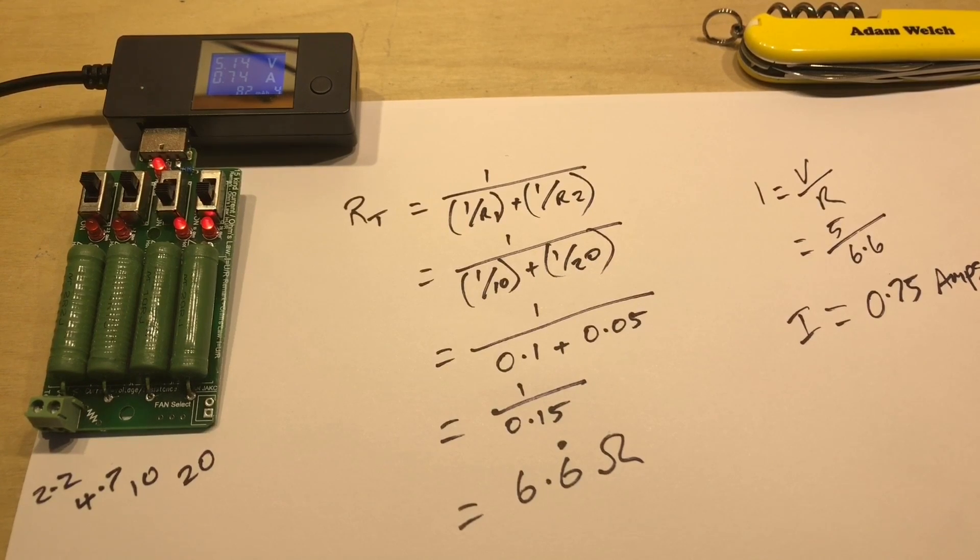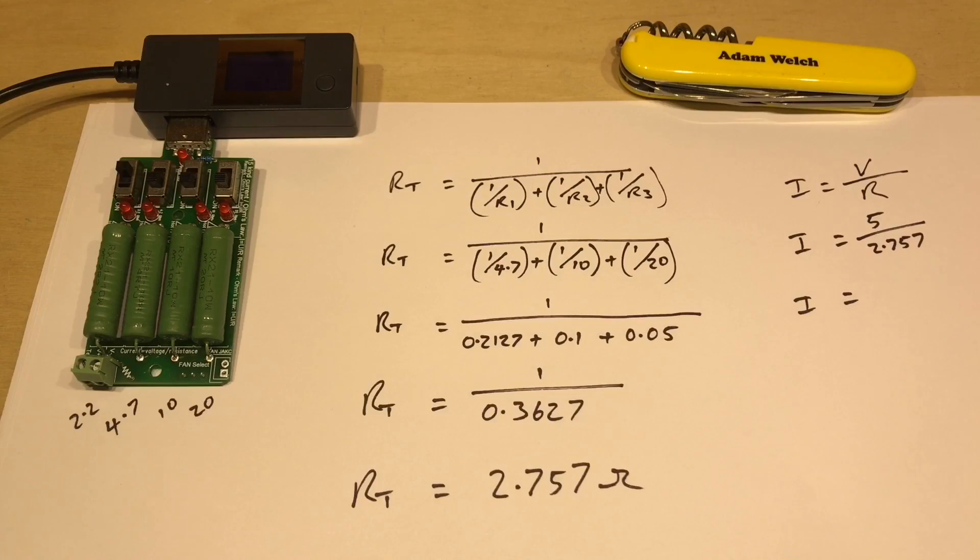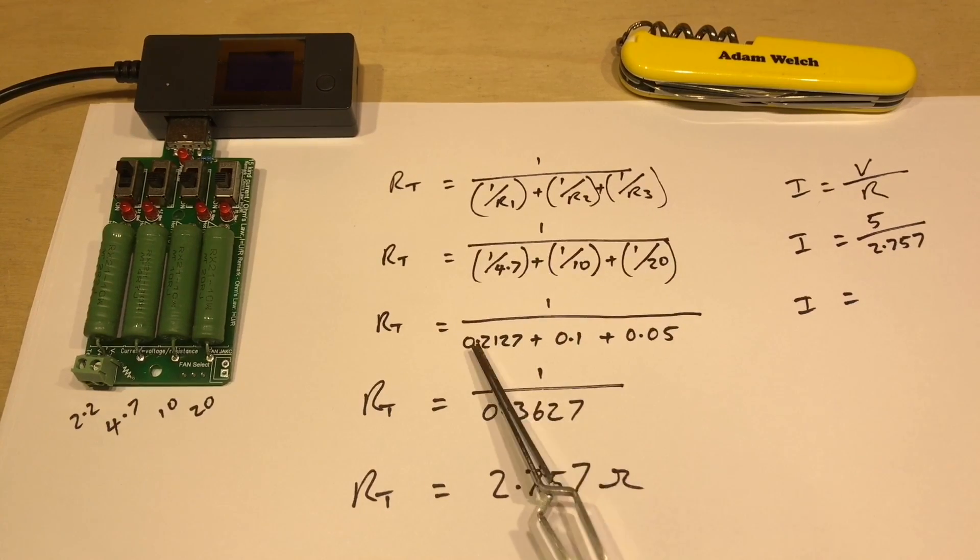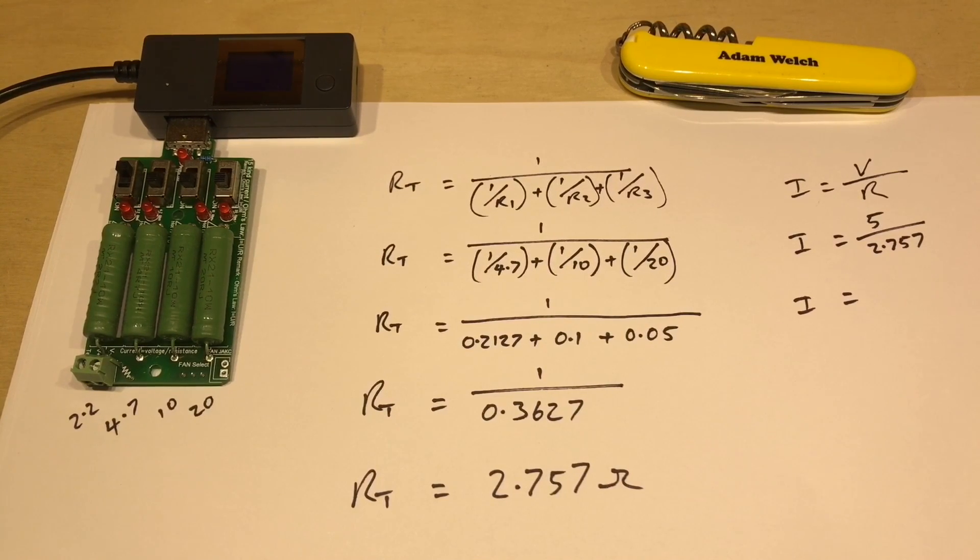Well I think it's worth doing a second example and in this example I'm turning on the 4.7, the 10 and the 20 ohm resistor and I've already done most of the maths here. So there it is, the 4.7, the 10, the 20, which eventually gives us 2.75 ohms pretty much.